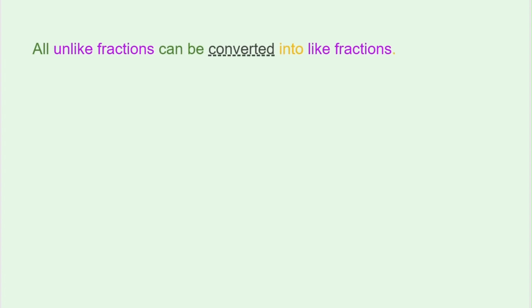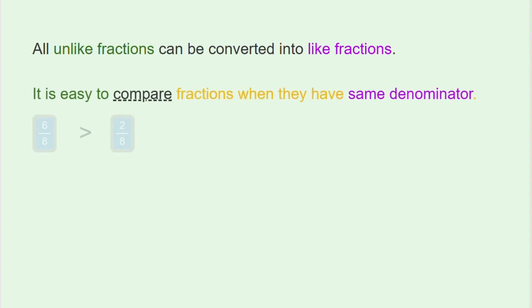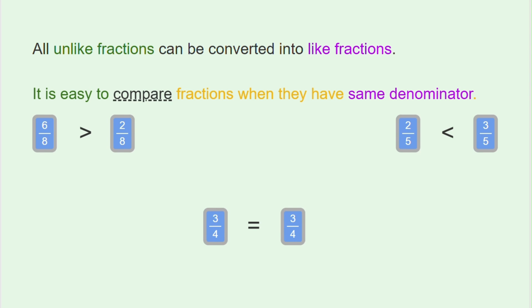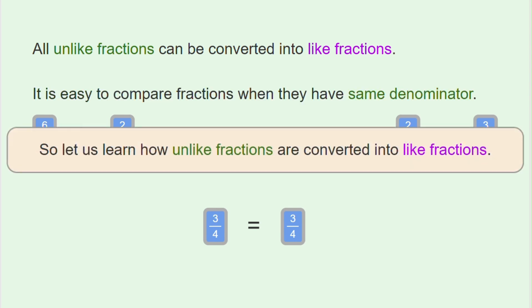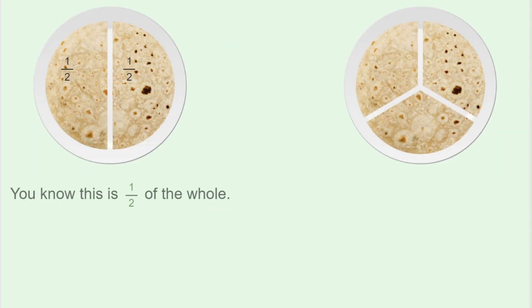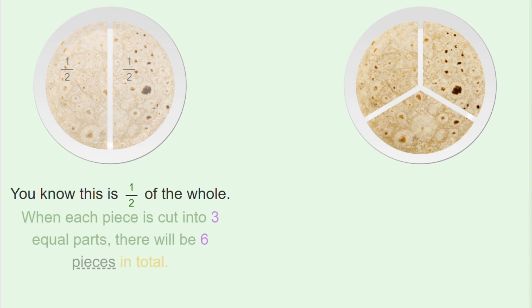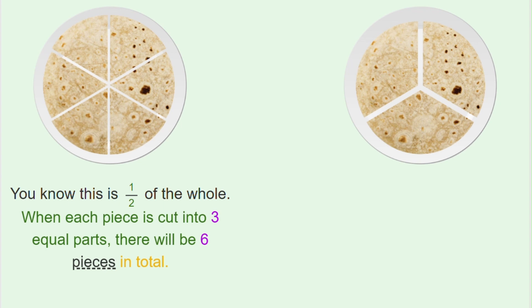All unlike fractions can be converted into like fractions. It is easy to compare fractions when they have the same denominator. So let us learn how unlike fractions are converted into like fractions. You know this is one half of the whole. When each piece is cut into three equal parts, there will be six pieces in total.